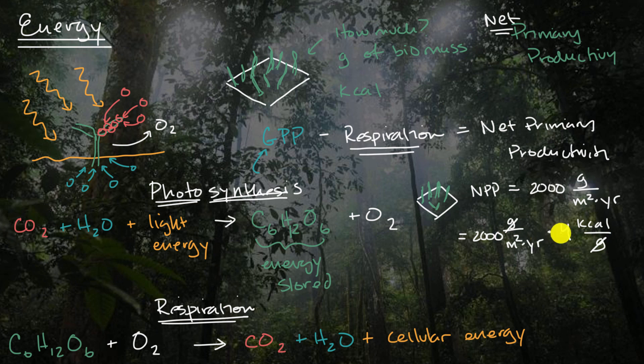The grams cancel out, and then you multiply four times 2,000, that's going to be 8,000 kilocalories per square meter per year. That would be the net primary productivity because that's after the plants have been doing respiration.